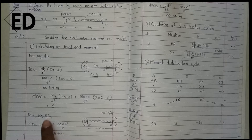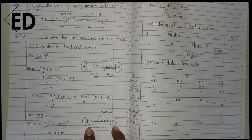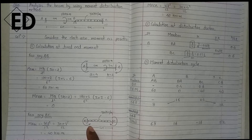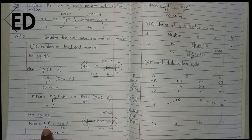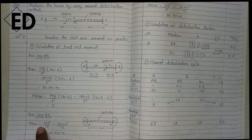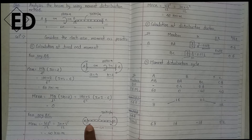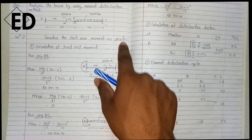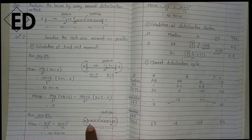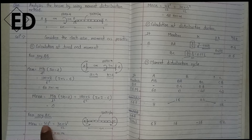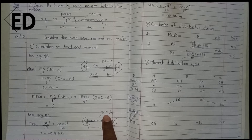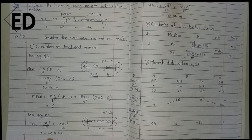Now moving towards the second span BC. Here a UDL is acting, and we have to calculate the fixed end moment at the support. The standard formula for this is WL²/12. We take a negative sign because the moment created at support B is in the anti-clockwise direction, and our sign convention takes clockwise as positive. Putting in W = 30 and L = 4, divided by 12, we get −40 kNm as the fixed end moment from B to C.